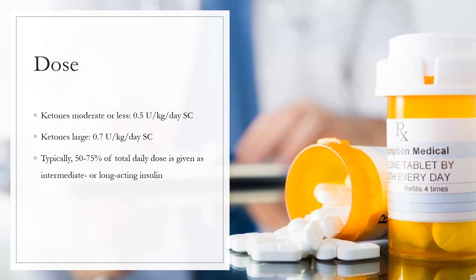Type 1 diabetes mellitus — suggestive guidelines for beginning dose: ketones moderate or less, 0.5 U/kg/day; ketones large, 0.7 U/kg/day. Typically 50 to 75% of total daily dose is given as intermediate or long-acting insulin. May use this combination product if the dosage ratio of NPH (isophane) to regular is 2 to 1.